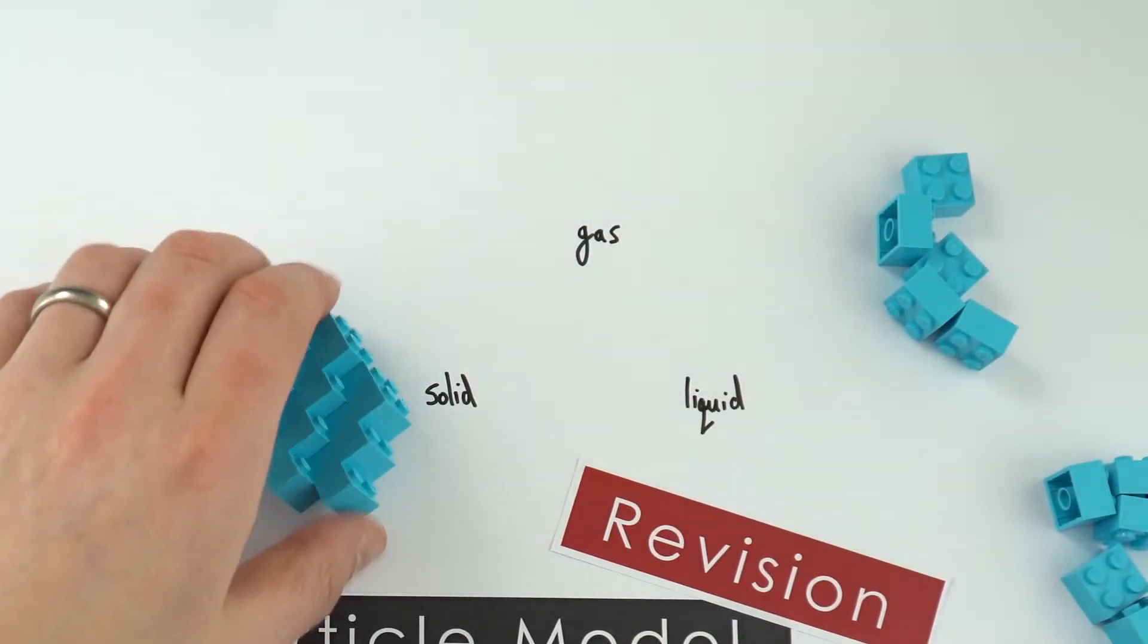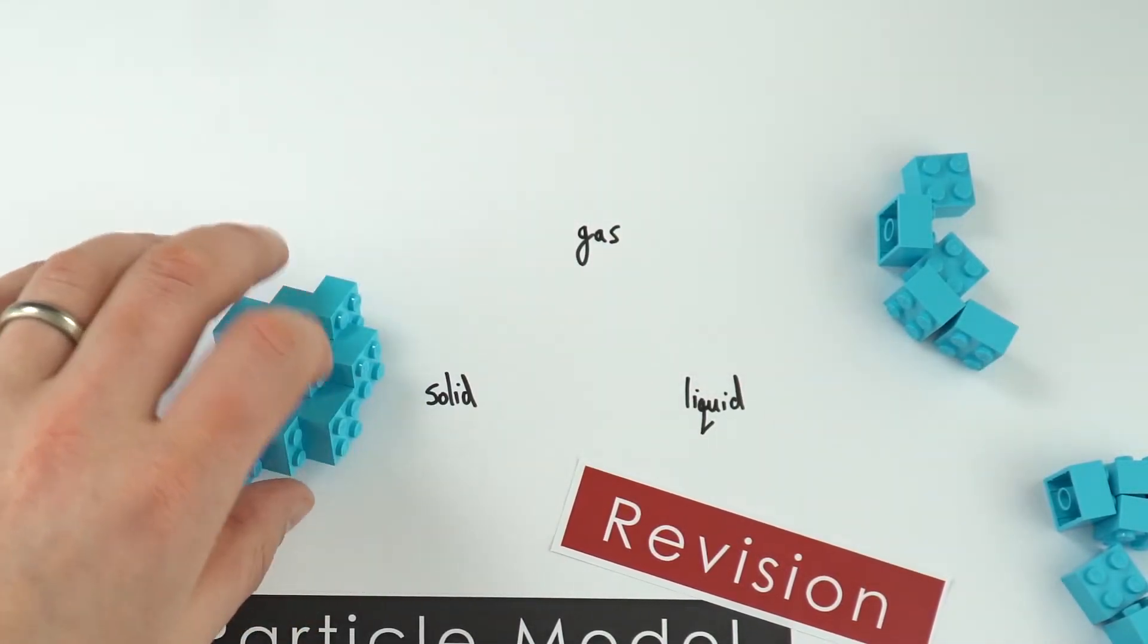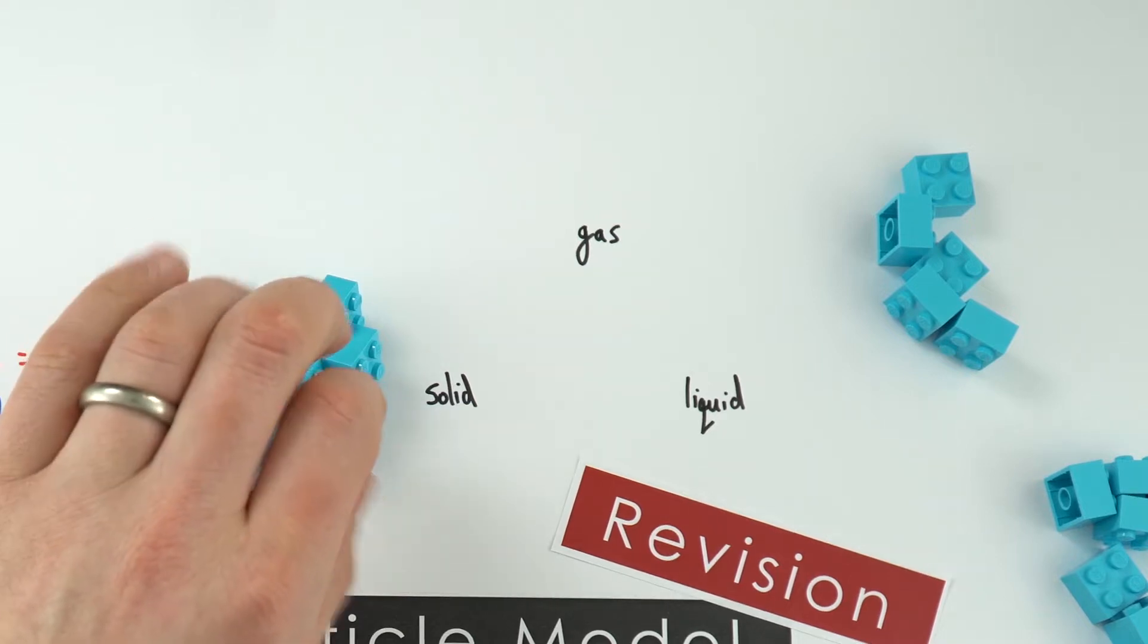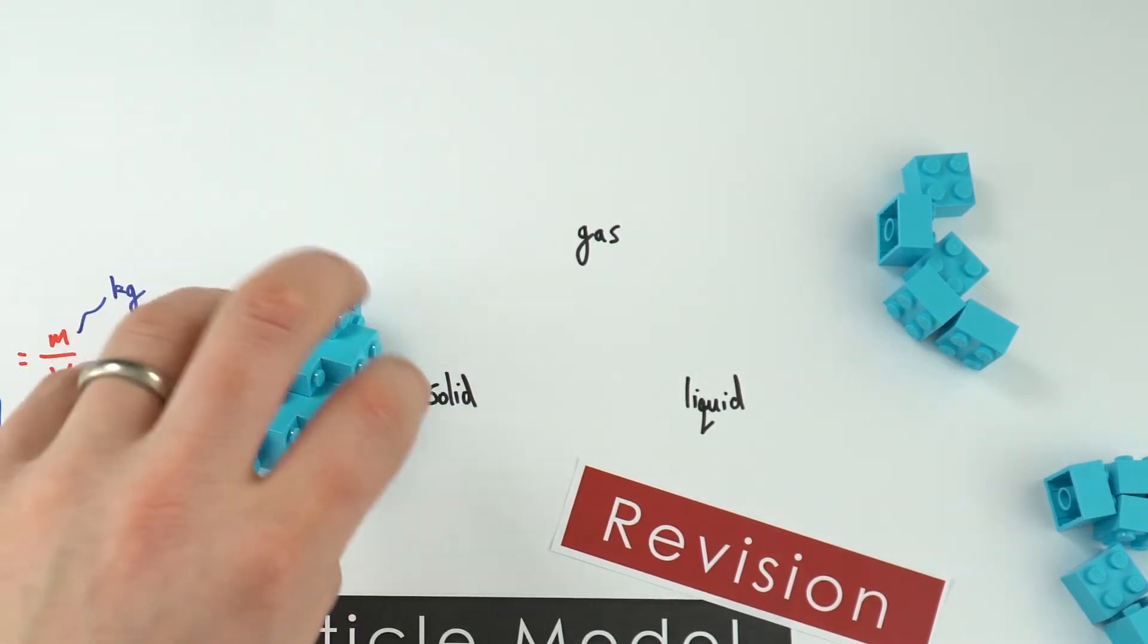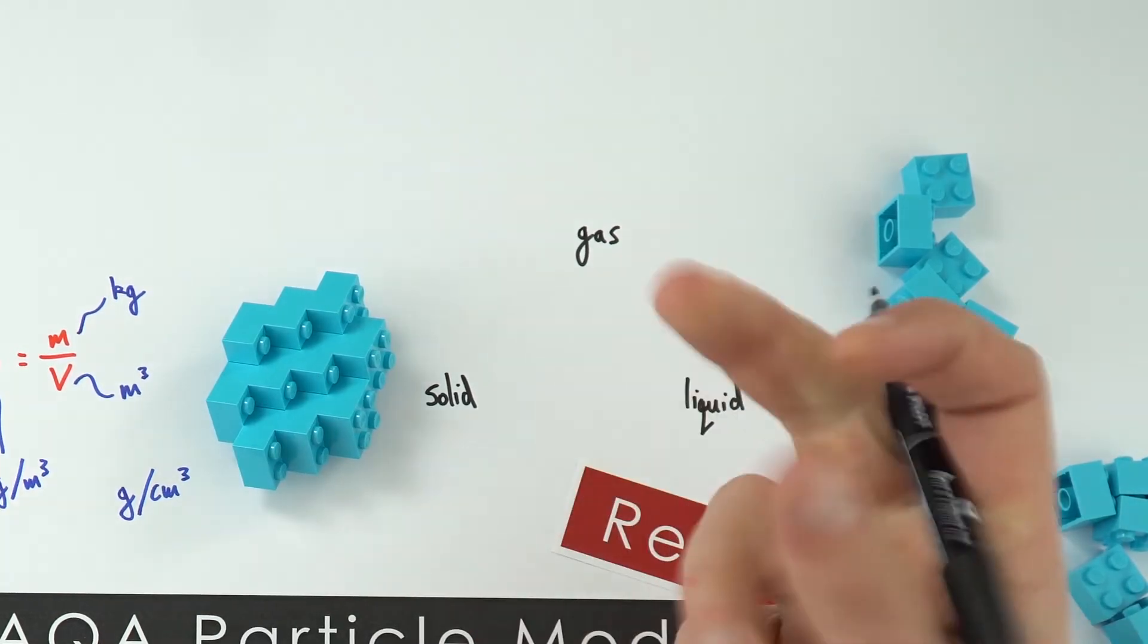In a solid, we have this close packed regular arrangement of particles. They're still jiggling around, still vibrating, but they're not really able to move around that material. That's why a solid is what it is.